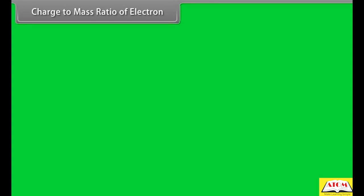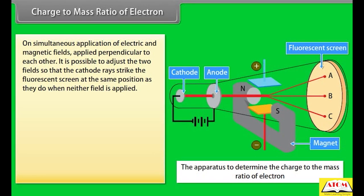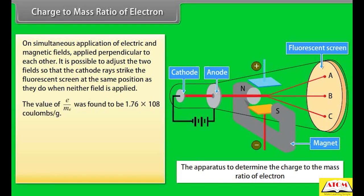Charge-to-mass ratio of electron: On simultaneous application of electric and magnetic fields perpendicular to each other, it is possible to adjust the two fields so that cathode rays strike the fluorescent screen at the same position as when neither field is applied. The value of charge-to-mass ratio of electrons was found to be 1.76 × 10⁸ coulombs per gram.